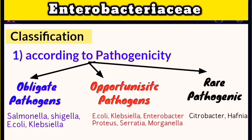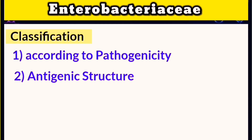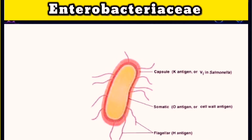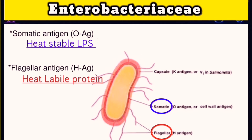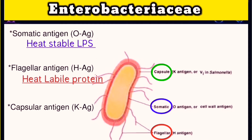Enterobacteriaceae may also be classified according to their antigenic structure. There are three main antigenic structures in this family: O, H, and K. The O antigen is a heat-stable lipopolysaccharide in the cell wall. The H antigen is a heat-labile protein present in flagellated or fimbriated bacteria, often referred to as the flagellar antigen. The K antigen is found in encapsulated bacteria. These antigens differ from species to species, or even subspecies to subspecies.